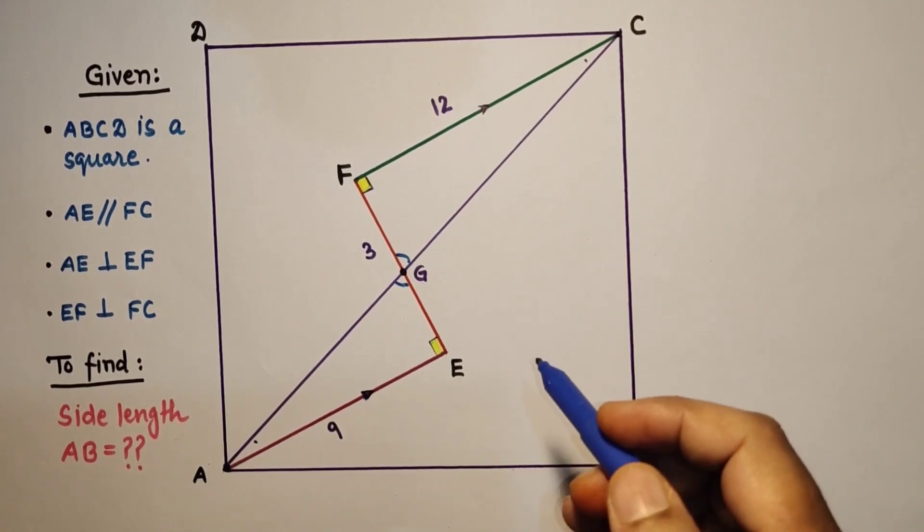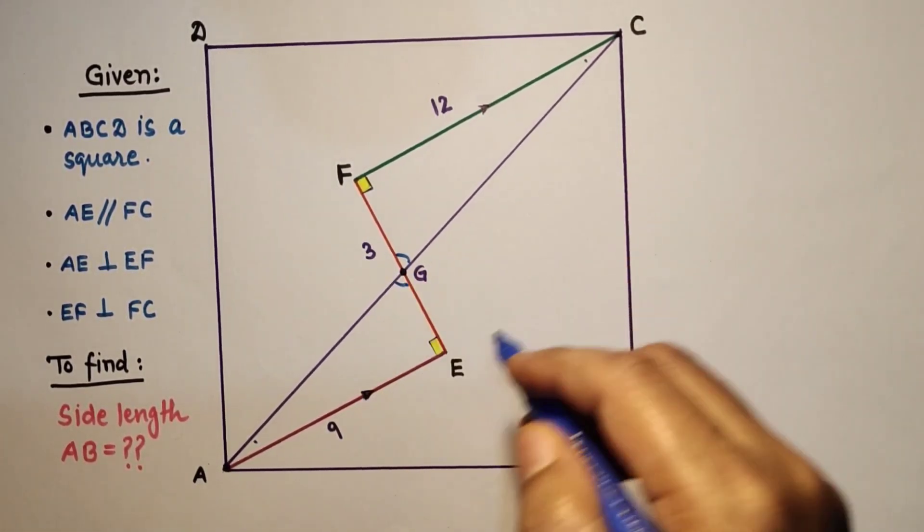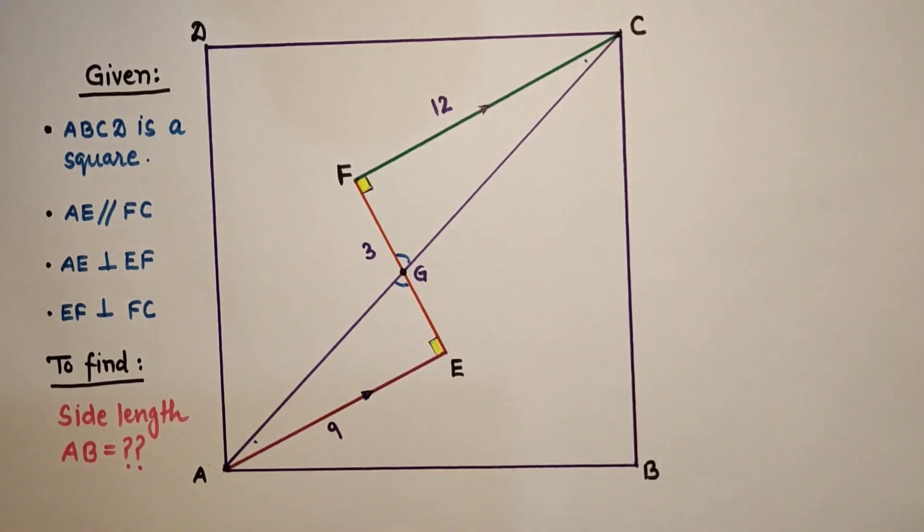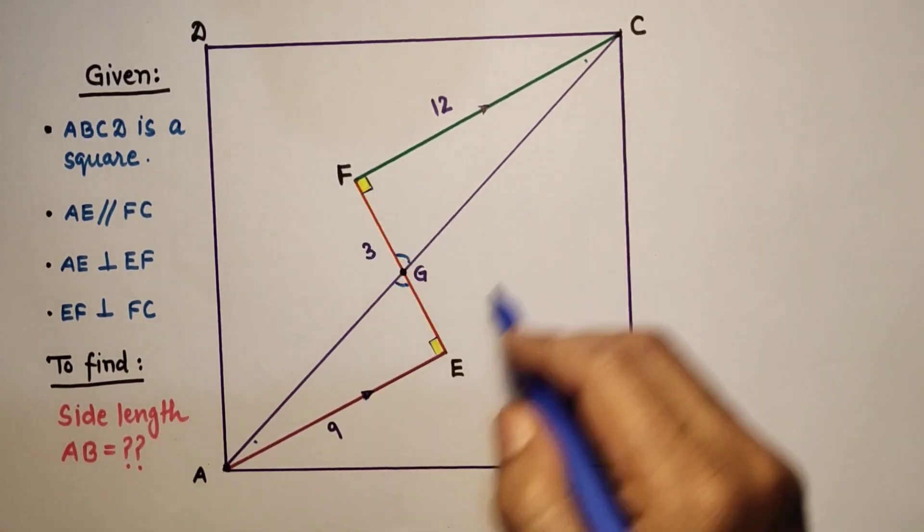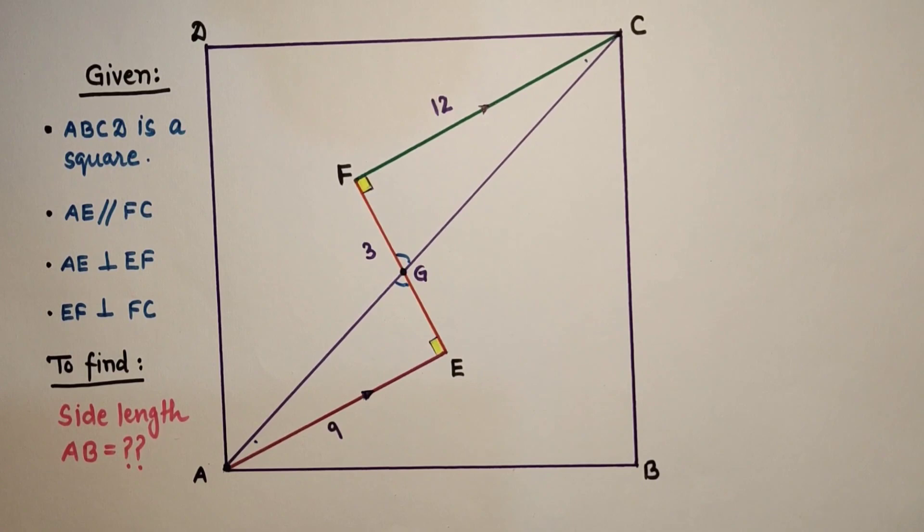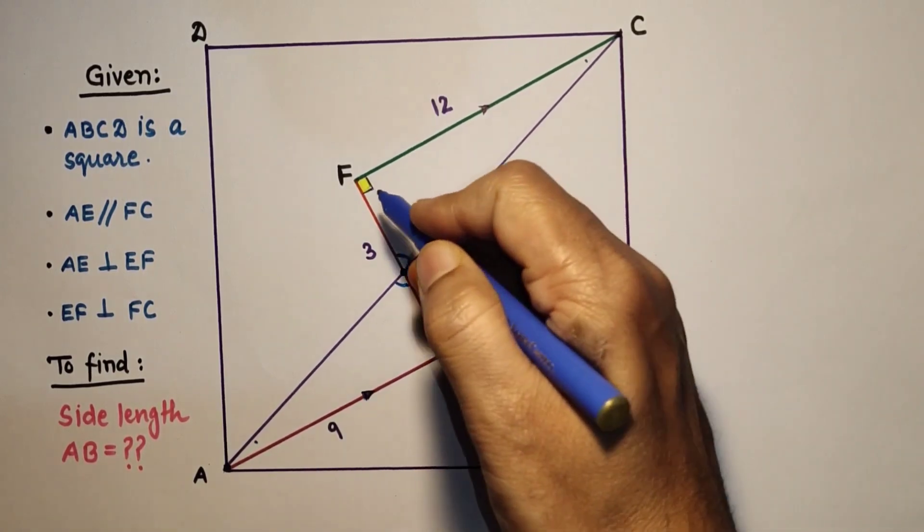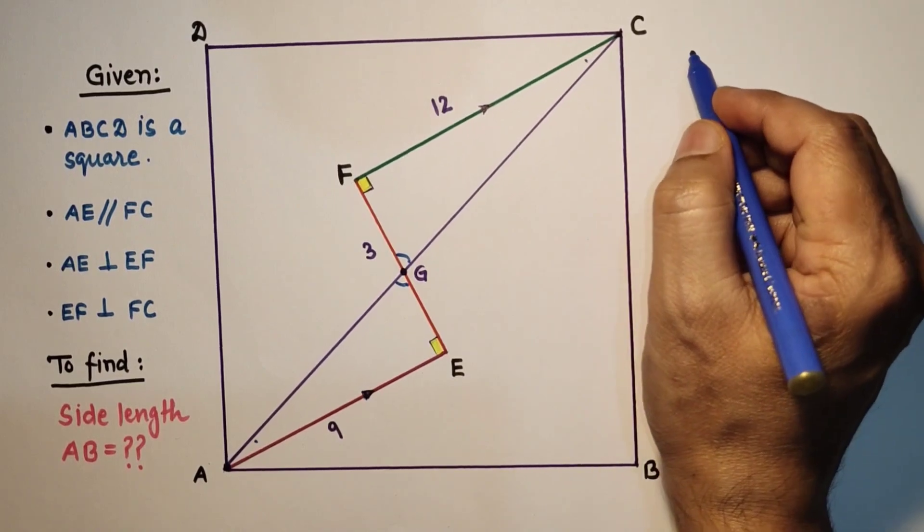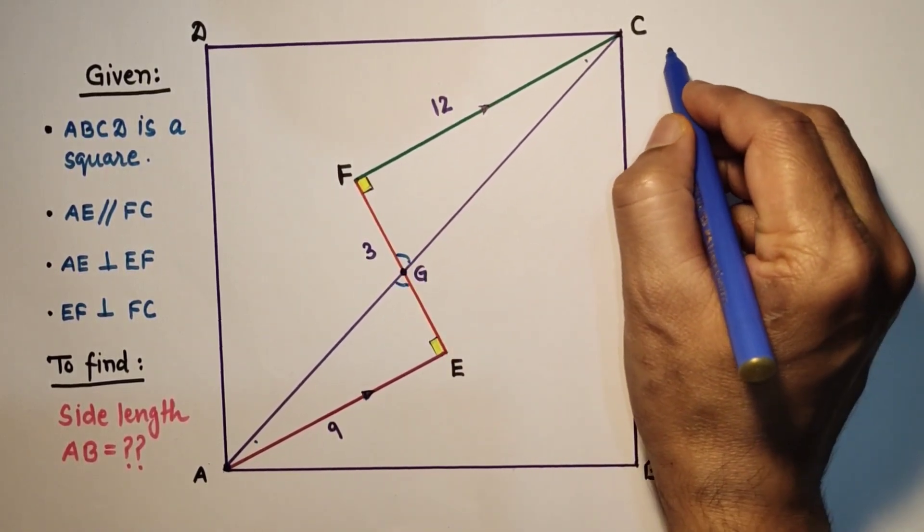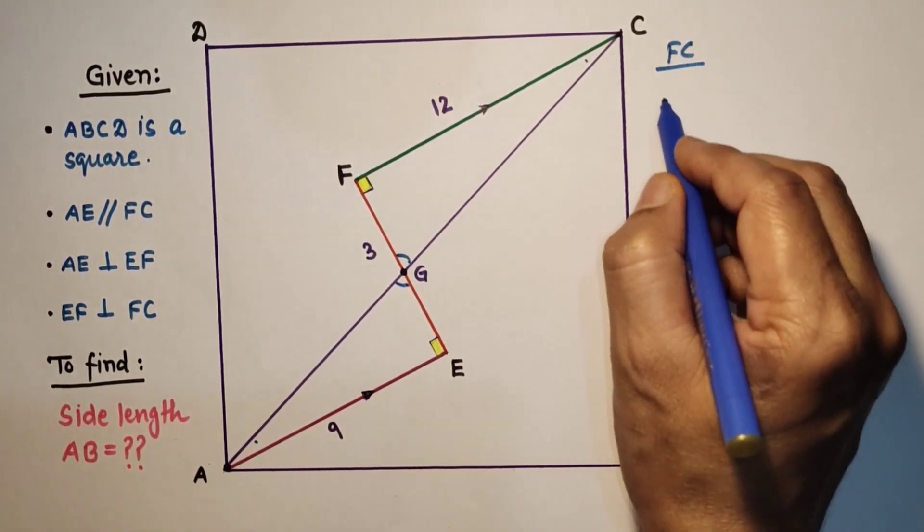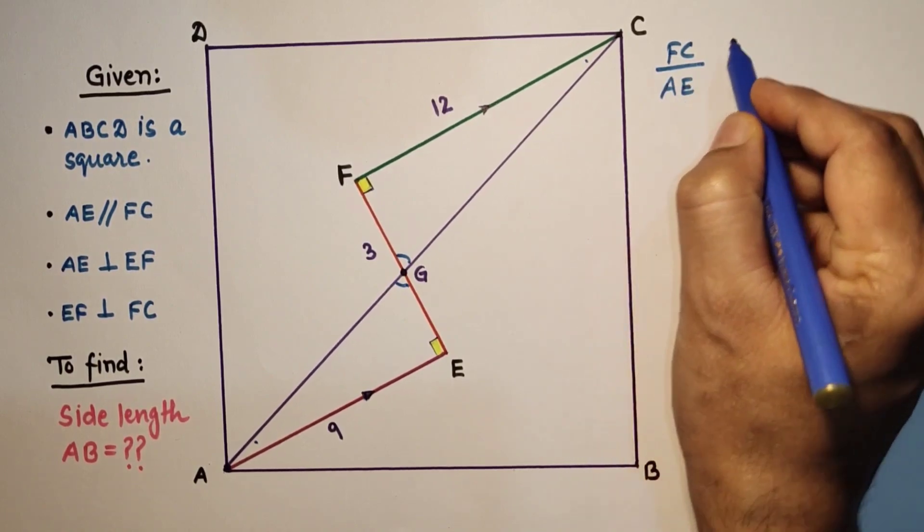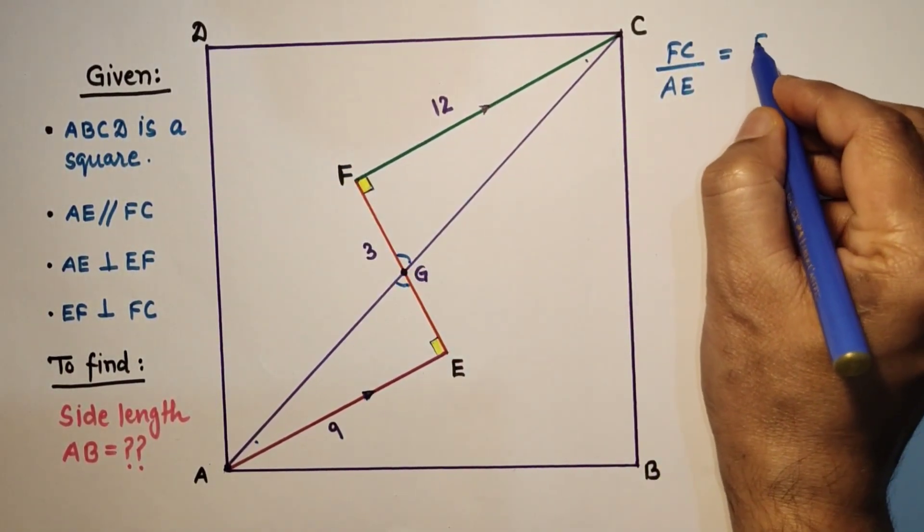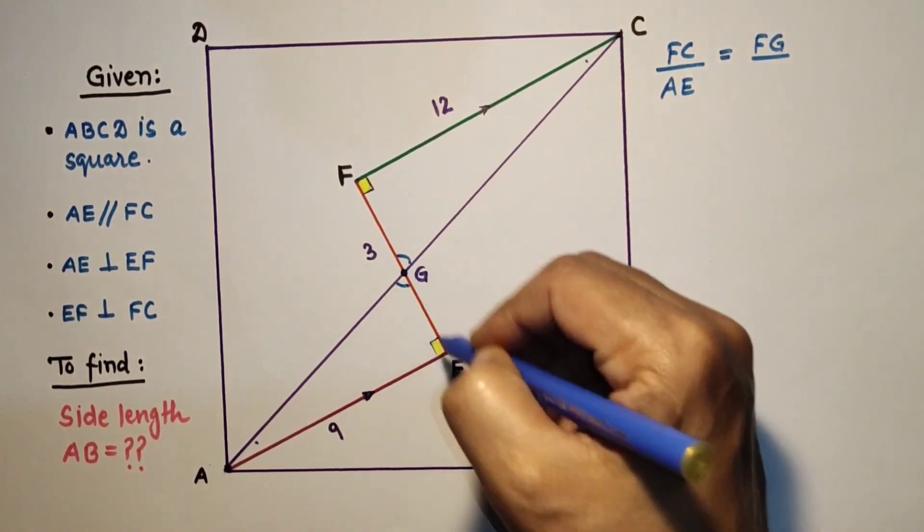Now for similar triangles, corresponding sides will be in same proportion, so the ratio between FC and AE would be same as the ratio between FG and GE. So since these two triangles are similar, FC by AE is equal to FG by GE.